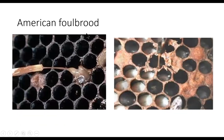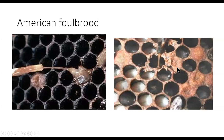Kemudian American Foulbrood, sejenis penyakit yang menyerang anakan. Anakan yang terserang akan mengisap cairannya sehingga lebah tidak akan lahir karena seluruh cairannya sudah disap oleh penyakit ini. Ciri-cirinya lebah yang diserang dengan American Foulbrood: penyakit ini menyerang pada anakan yang masih dalam sel sarang, menyebabkan kematian pada anakan sehingga tidak akan berkembang dan lahir menjadi serangga dewasa.